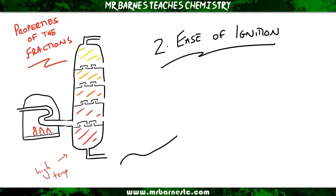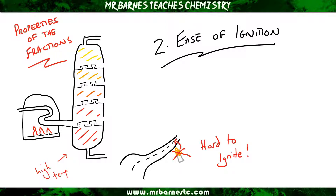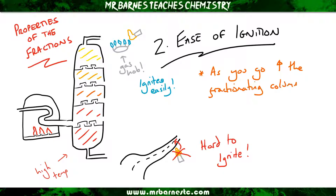The second property is the ease of ignition. At the bottom of the column we have bitumen, which is used to surface roads — throw a match on it and it's not going to ignite, so it's hard to ignite. Whereas at the top we have gases, like the gas hob in your home — put a match to that and it will set on fire, so it ignites easily. Therefore, as you go up the fractionating column, it becomes easier to ignite.